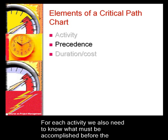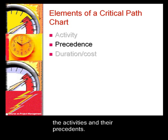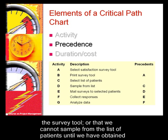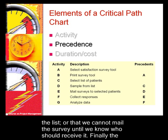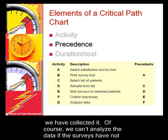For each activity, we also need to know what must be accomplished before the activity can start. This is referred to as a precedence. A critical path chart shows both the activities and their precedence. For example, we cannot print the survey until we have selected the survey tool, or we cannot sample from the list of patients until we have obtained the list, or we cannot mail the survey until we know who should receive it.